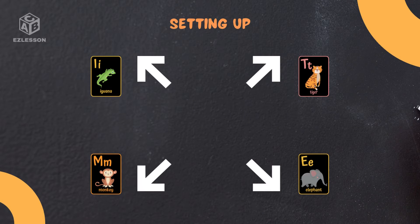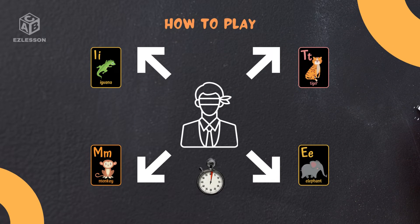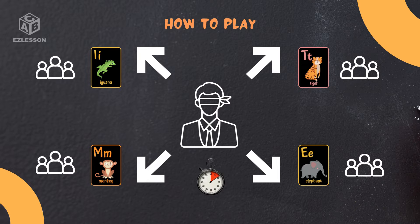First, choose four vocabulary words you've recently introduced. Place a flashcard in each corner of your classroom, each representing one of these words. The guesser stands in the middle, closes their eyes, and counts down from 10. While the guesser counts, everyone else picks a corner to stand in.